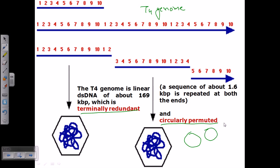They are called terminally redundant because usually there is a sequence of about 1.6 kilobase pairs that is repeated in both ends. During the packaging, let's say if this is the whole genome, when it is getting packaged it is cleaved from different sections.